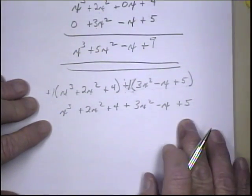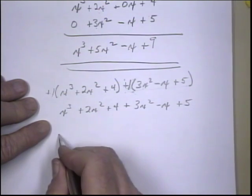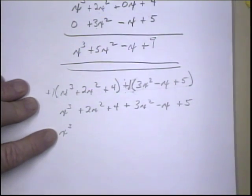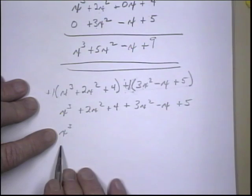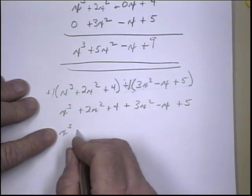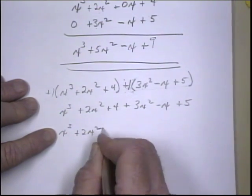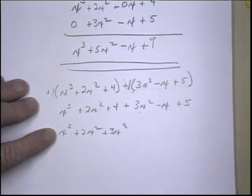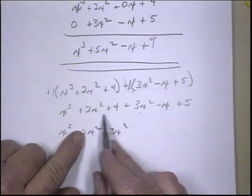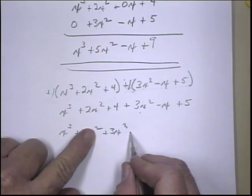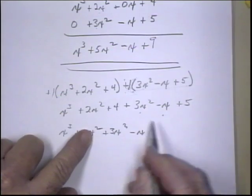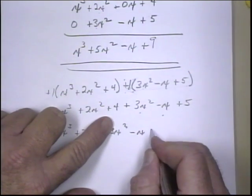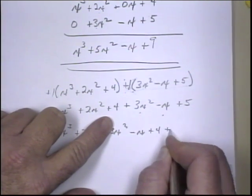Now, we're going to group like terms. So we only have 1x cubed, so we'll put it first. The x squares go second, so we have a 2x squared and we have this 3x squared. We don't have an x term here, but we have a minus x here, and then our whole numbers, we have 4 and 5.